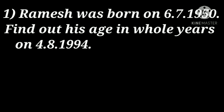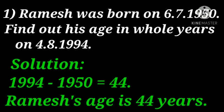Now let us solve some sums. Ramesh was born on 6th July 1950. Find out his age in whole years on 4th August 1994. Here they have given the birth date of Ramesh and we have to find his age in 1994. We subtract the birth year from the given year: 1994 minus 1950 equals 44. Therefore, Ramesh's age in the year 1994 is 44 years.